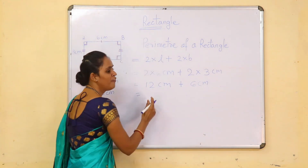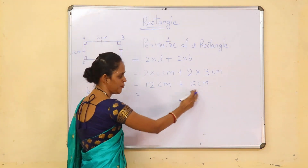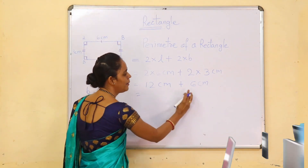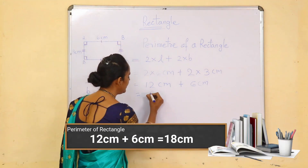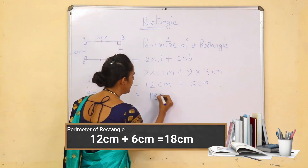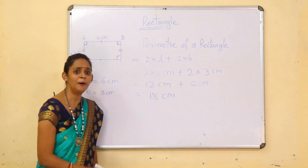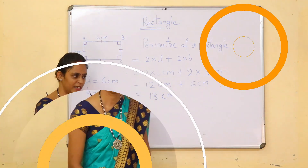Now we add the values: 12 cm plus 6 cm equals 18 cm. This is the perimeter of the rectangle.